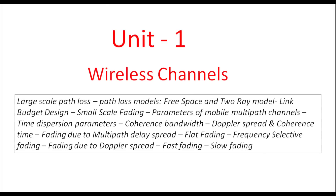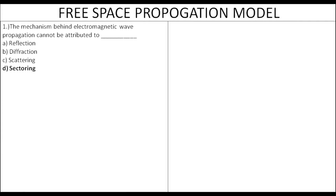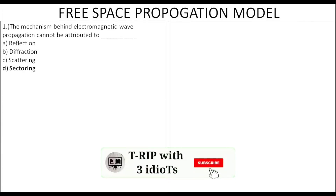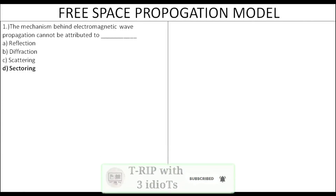Let's go to the questions. The first question is: the mechanism of electromagnetic wave propagation that cannot be attributed — the three basics are reflection, diffraction, and scattering. These are the three electromagnetic wave propagation mechanisms.